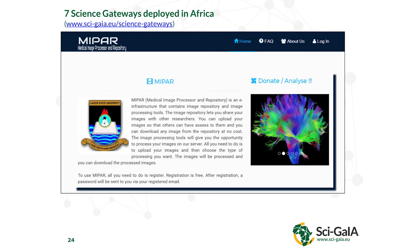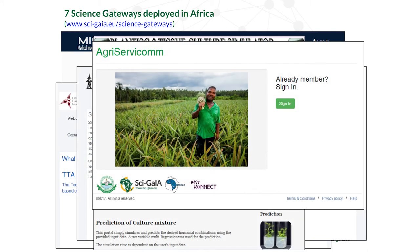We have seven science gateways in total — the Africa Grid Science Gateway plus six domain-specific ones. One is MIPER, for medical image processing and analysis, and there are other science gateways you will hear about in presentations today and tomorrow.